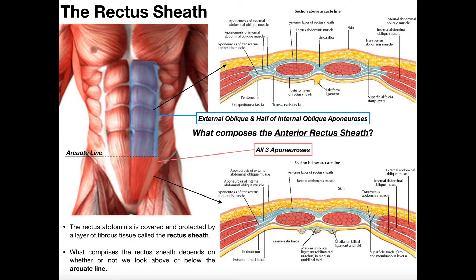Welcome back to Anatomy & Physiology on Catalyst University. My name is Kevin Tokoff. Please make sure to like this video and subscribe to my channel for future videos and notifications. In this video, we're going to continue our discussion of the anterior abdominal wall and talk specifically about a structure called the rectus sheath.